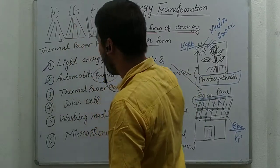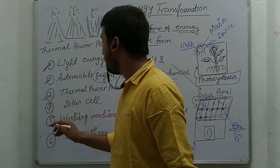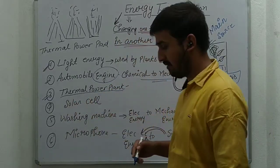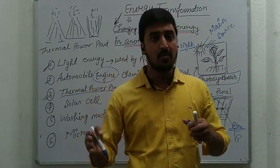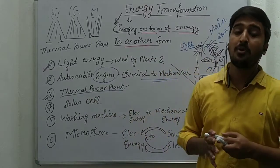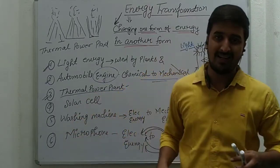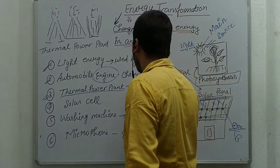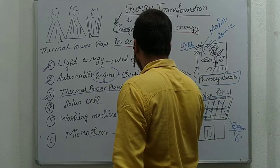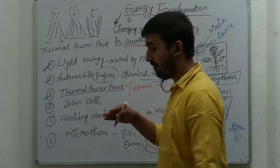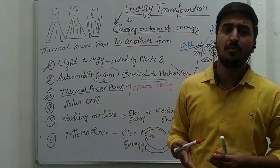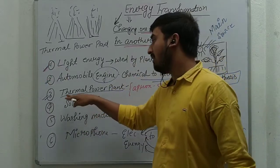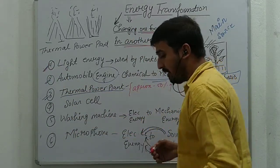In the last class I had already discussed the thermal power plant. A thermal power plant is the type of plant in our country by which we produce the maximum amount of electrical energy — approximately 50% or more of our electrical energy comes from thermal power plants. There are different types of power plants: thermal, hydro, and wind, but maximum energy is produced from thermal power plants.